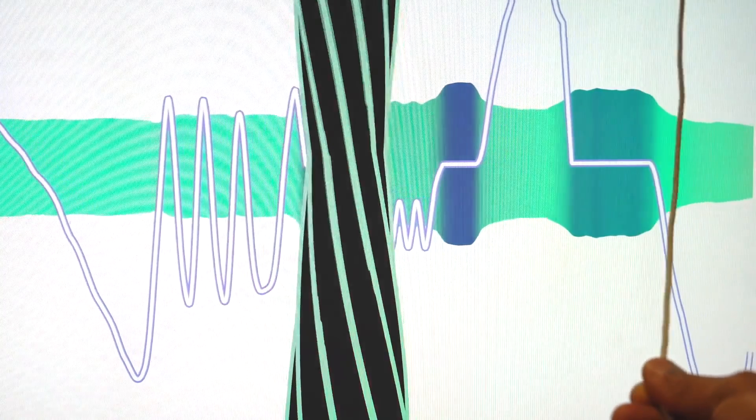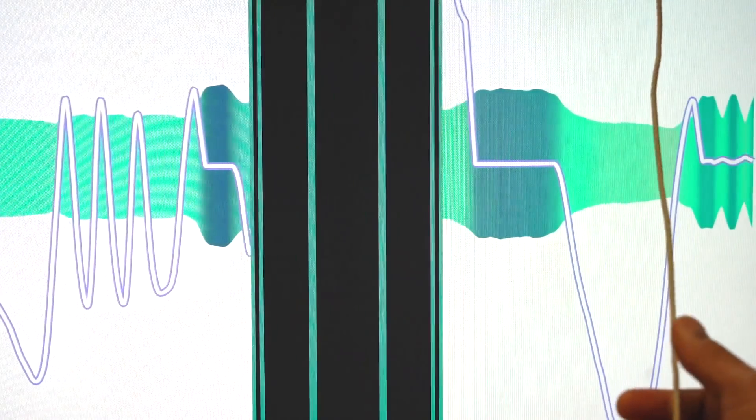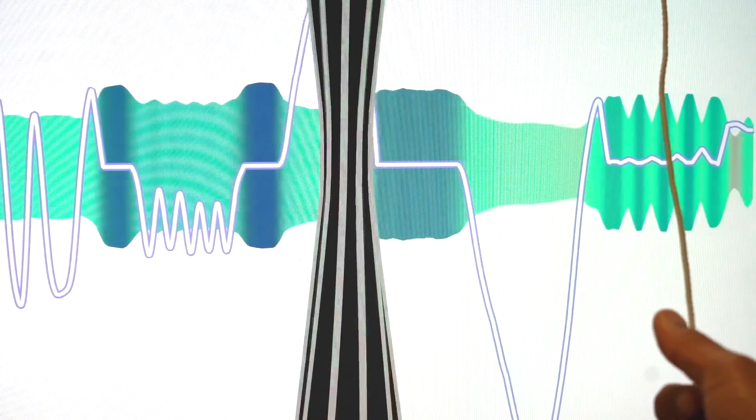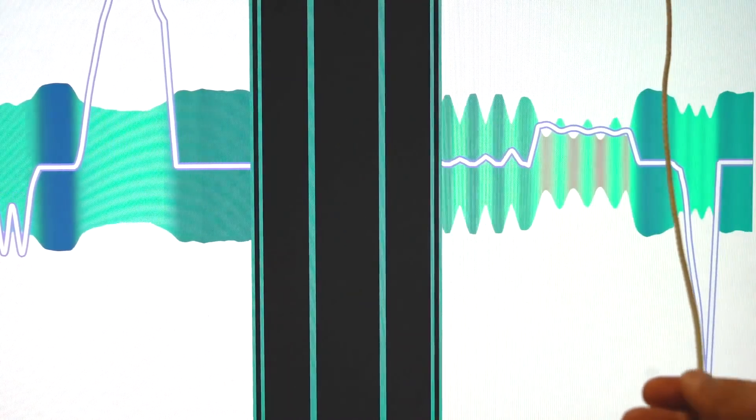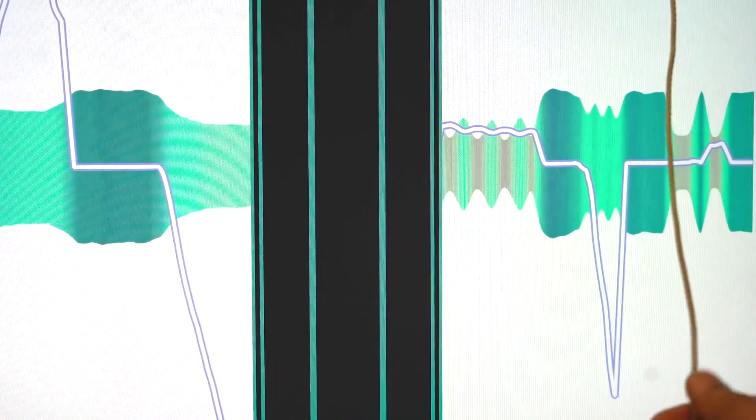Similar to traditional touchscreen interactions, we can map varying contact times to specific actions. This capability enables short presses, long presses, or press and hold as mechanisms to trigger different discrete actions.